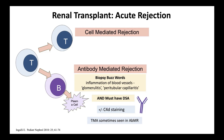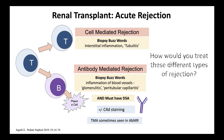For cell-mediated rejection, the biopsy buzzwords are interstitial inflammation and tubulitis. The T cells leave the blood vessels and go right into the parenchyma and interstitium, causing inflammation there. Tubulitis is the key word to look out for.